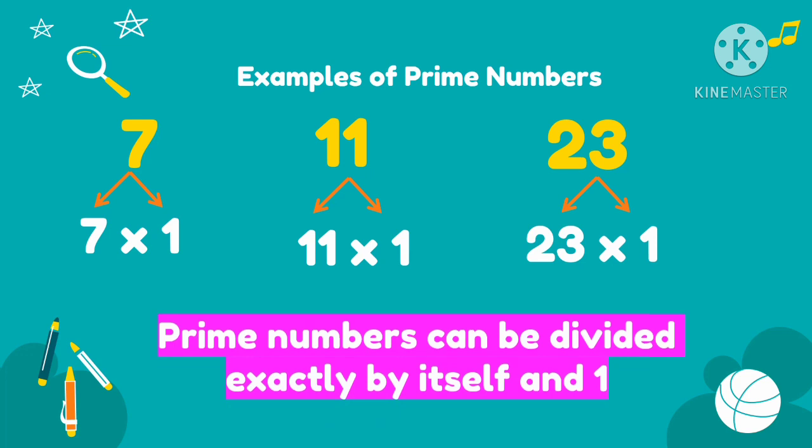So prime numbers can only be divided exactly by itself and 1. There is no other number that can divide a prime number except itself and 1.